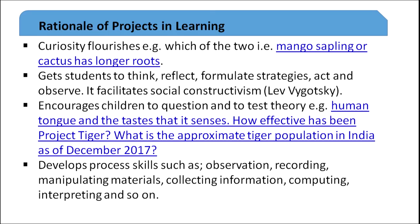Projects encourage children to question and to test theory — we want children to learn to question why something happens and to test theory. For example, the human tongue senses four different tastes — that can be tested. How effective has Project Tiger been in our country? What is the approximate tiger population in India as of December 2017? This shows how recent and relevant the information can be.